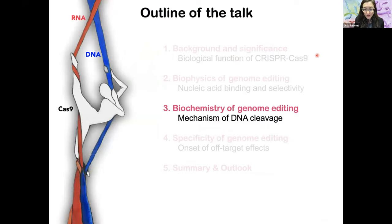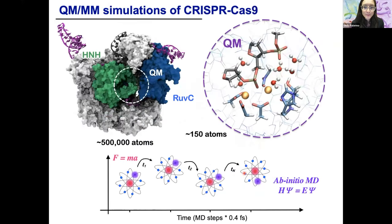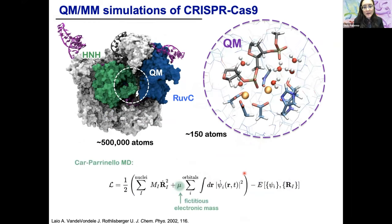Now moving to the biochemistry of genome editing — how does CRISPR-Cas9 cleave DNA? CRISPR-Cas9 is characterized by the presence of two catalytic sites that perform cleavages of the DNA target strand, the one that matches the RNA, and of the DNA non-target strand through the aid of metal ions, magnesium ions. To characterize the mechanism of DNA cleavage, we performed quantum mechanics/molecular mechanics simulations. The active site is treated at a quantum mechanical level of theory using density functional theory, while the rest of the system is treated with classical mechanics. The dynamics of the system was propagated using a Car-Parrinello approach, introducing a fictitious electronic mass, which enables us to speed up the dynamics.